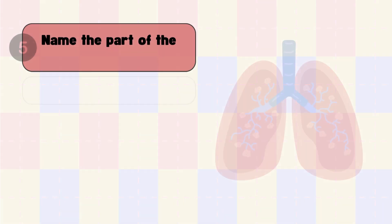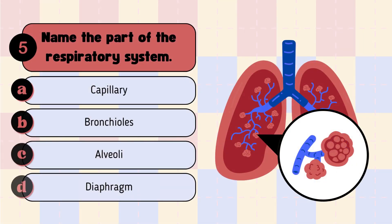Question 5: Name the path of the respiratory system. Look at the highlighted path inside the circle. A. Capillary, B. Bronchiolus, C. Alveoli, D. Diaphragm.